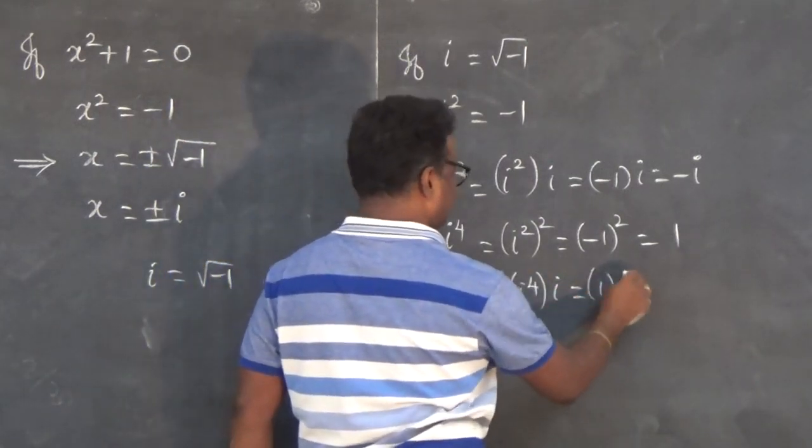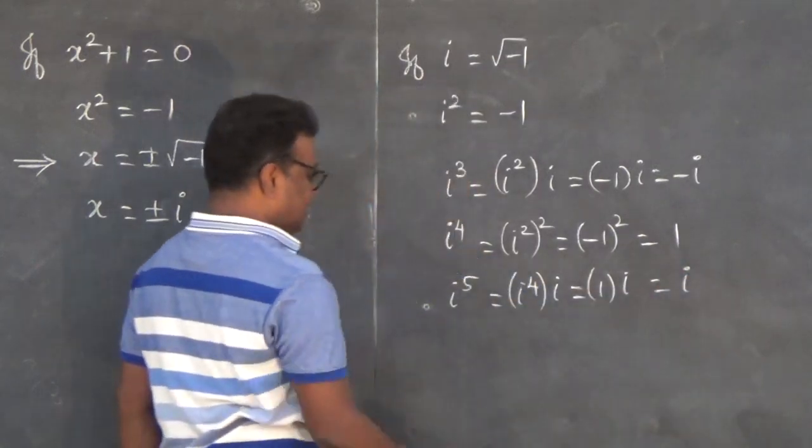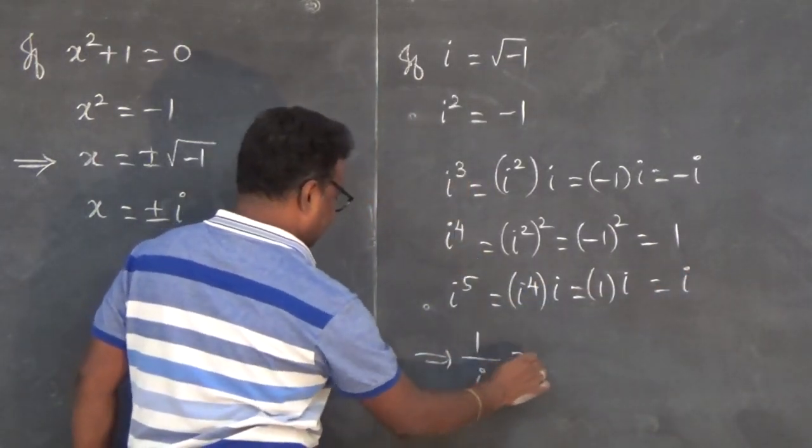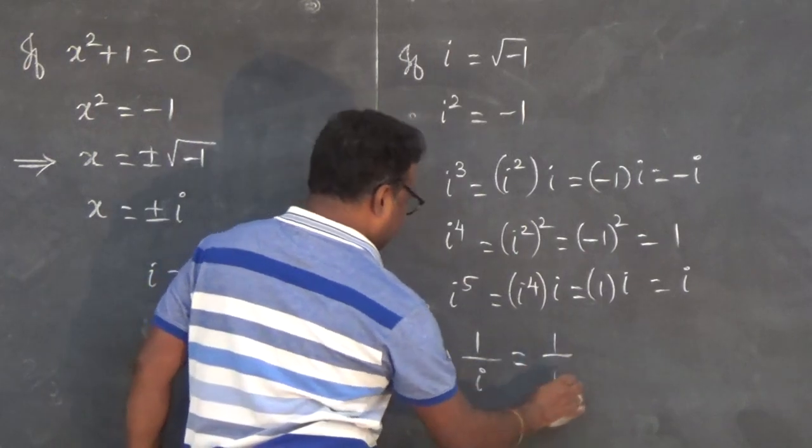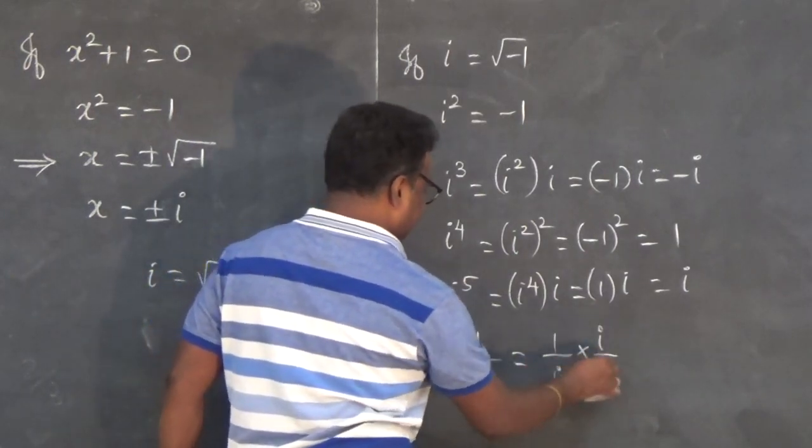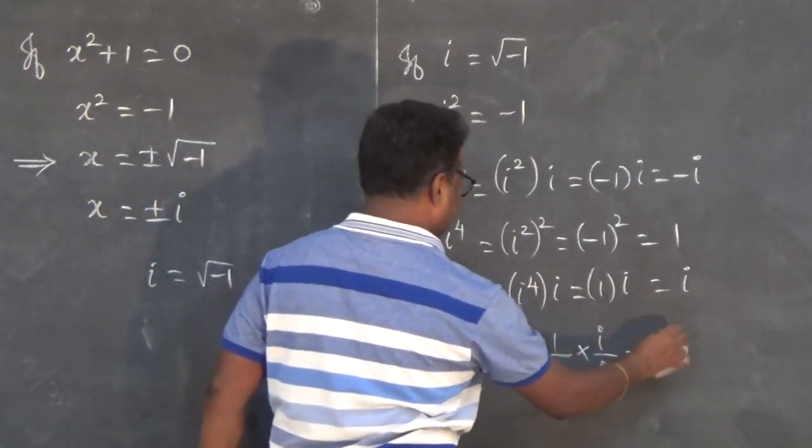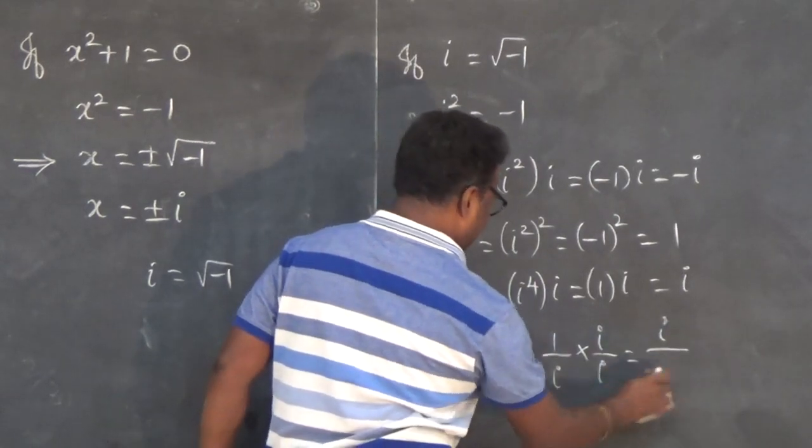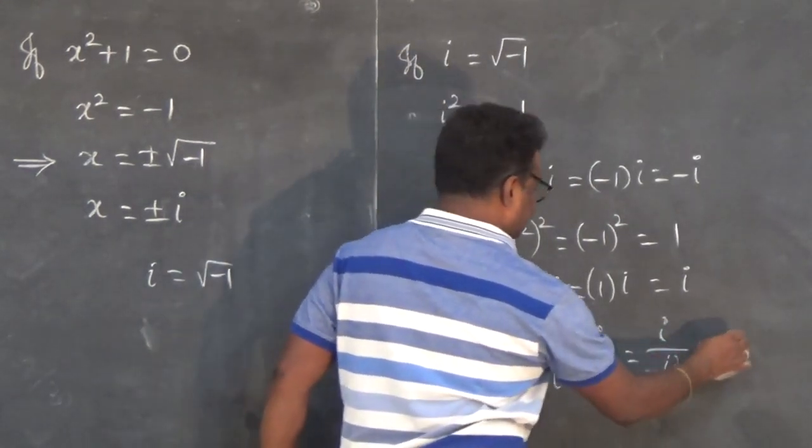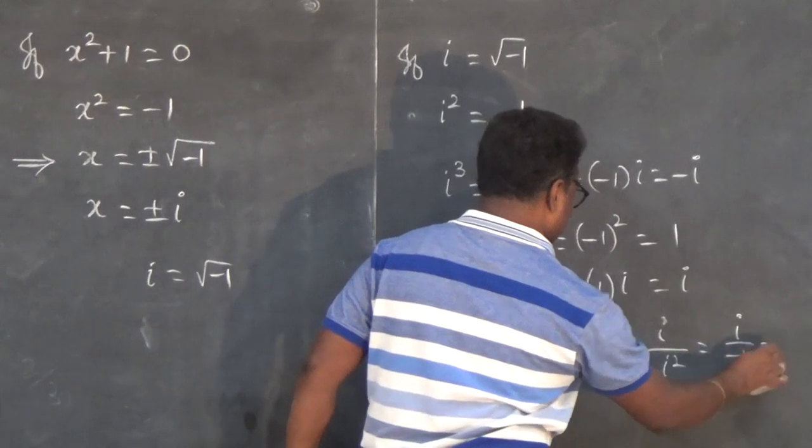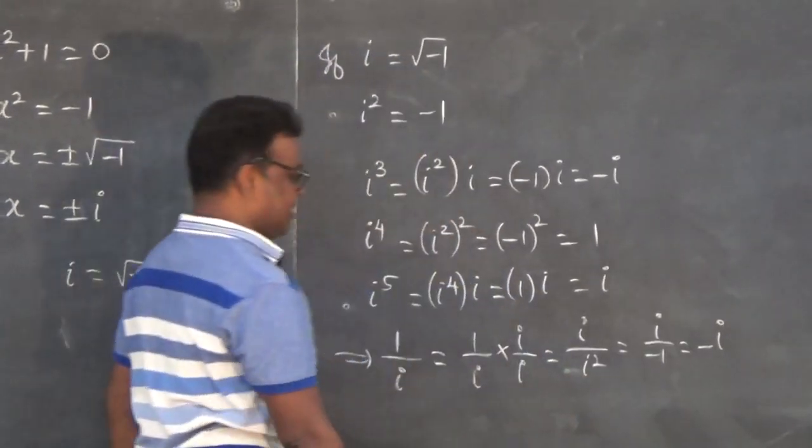Also, 1/i = 1/i × i/i = i/i² = i/(-1) = -i.